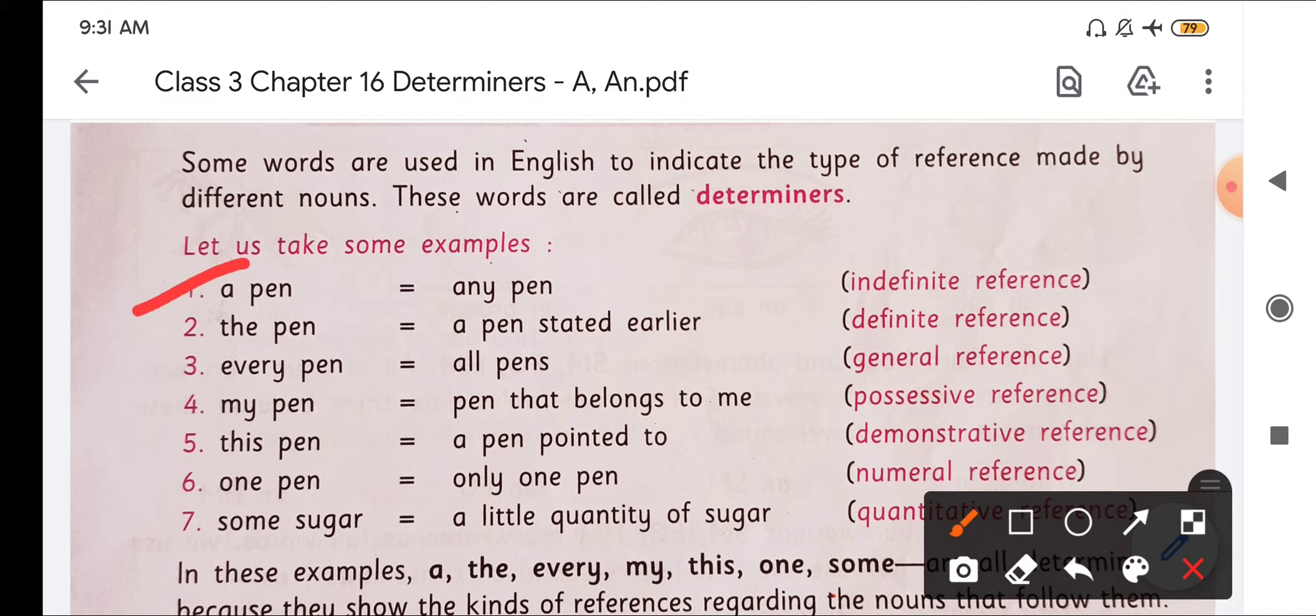What is the first one? A pen means any pen. So that is indefinite reference. Means you don't know which pen it is, what pen it is. So a pen, that can be any pen. The second one is the pen, a pen stated earlier. That is definite. We know that pen is already there. The pen which we stated earlier, that pen is the now.